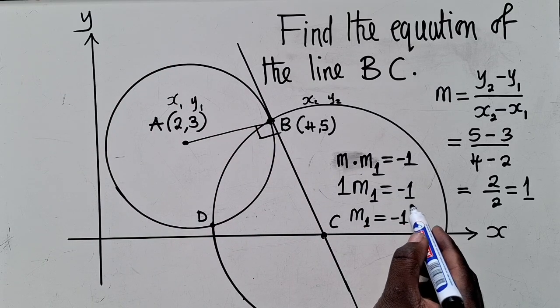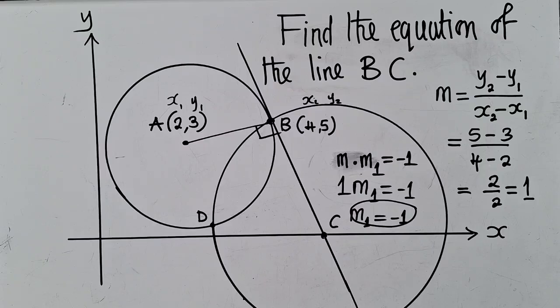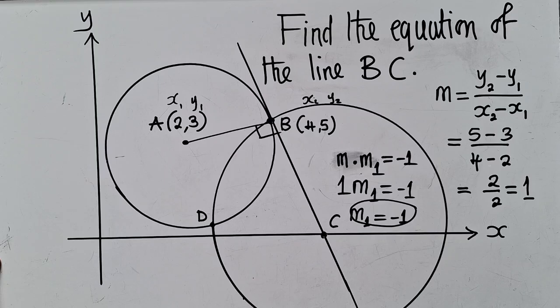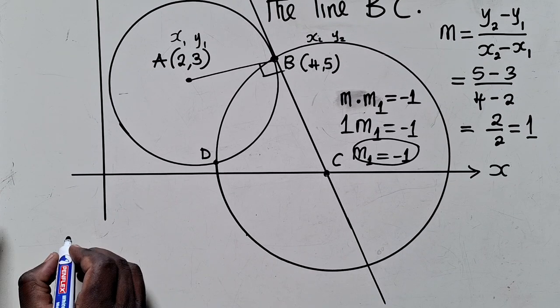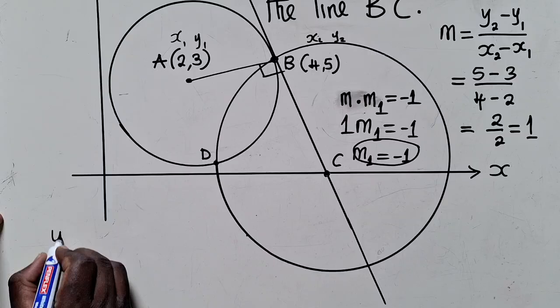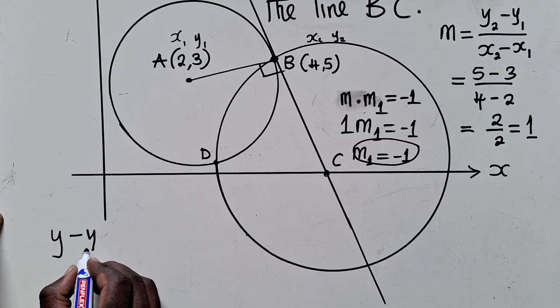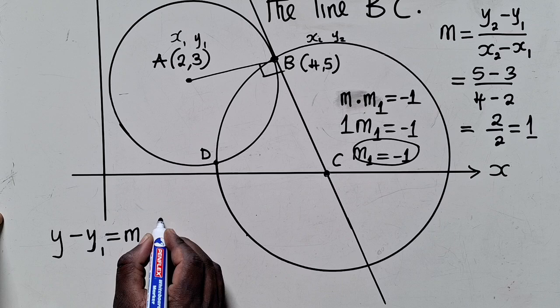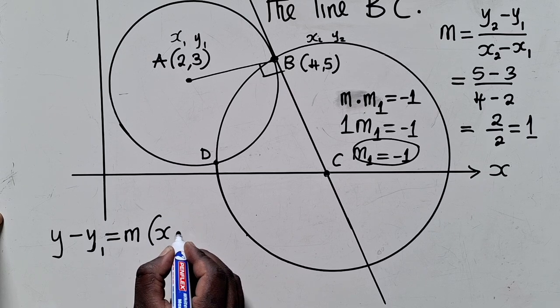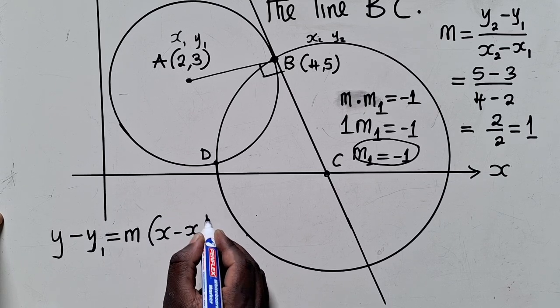Now that we've known the gradient, we can now use the formula for finding equation of a straight line. So here we can say, Y minus Y1 is equal to M, open bracket, X minus X1.